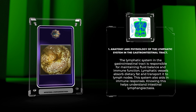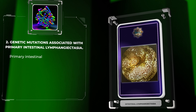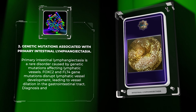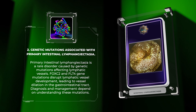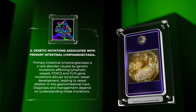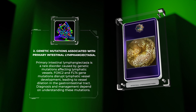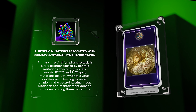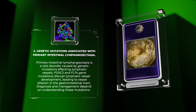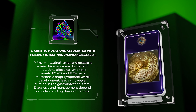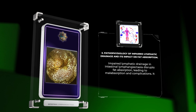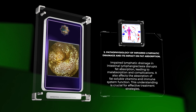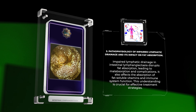Primary intestinal lymphangiectasia is a rare disorder caused by genetic mutations affecting lymphatic vessels. FOXC2 and FLT4 gene mutations disrupt lymphatic vessel development, leading to vessel dilation in the gastrointestinal tract. Diagnosis and management depend on understanding these mutations.